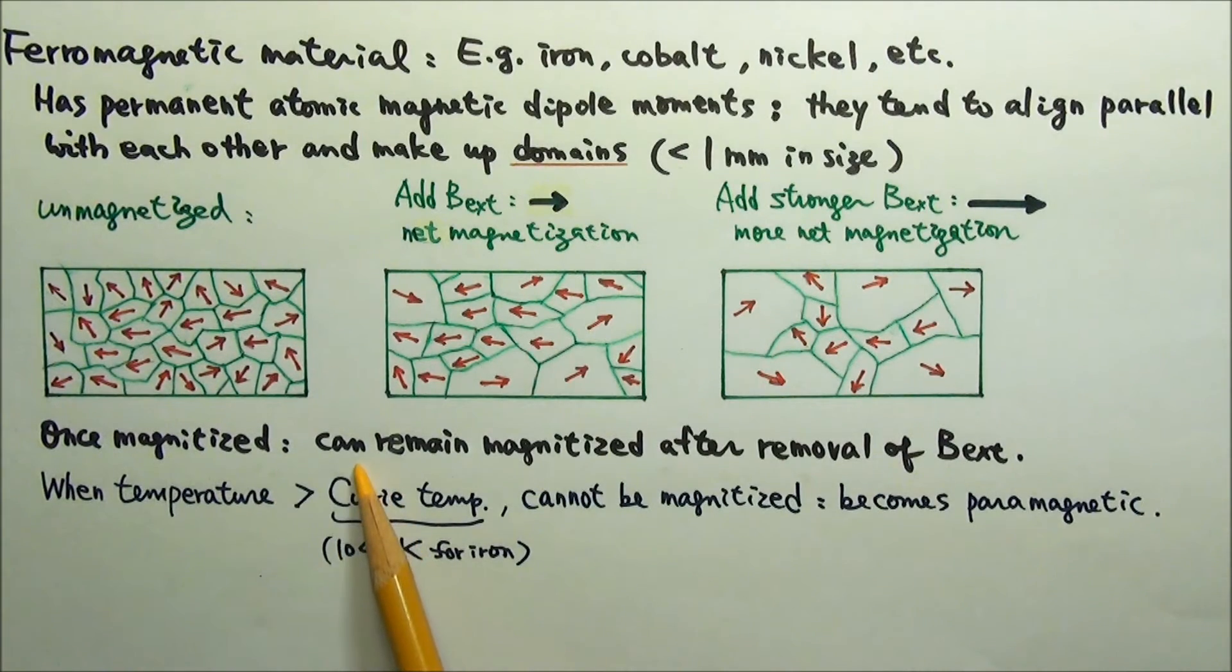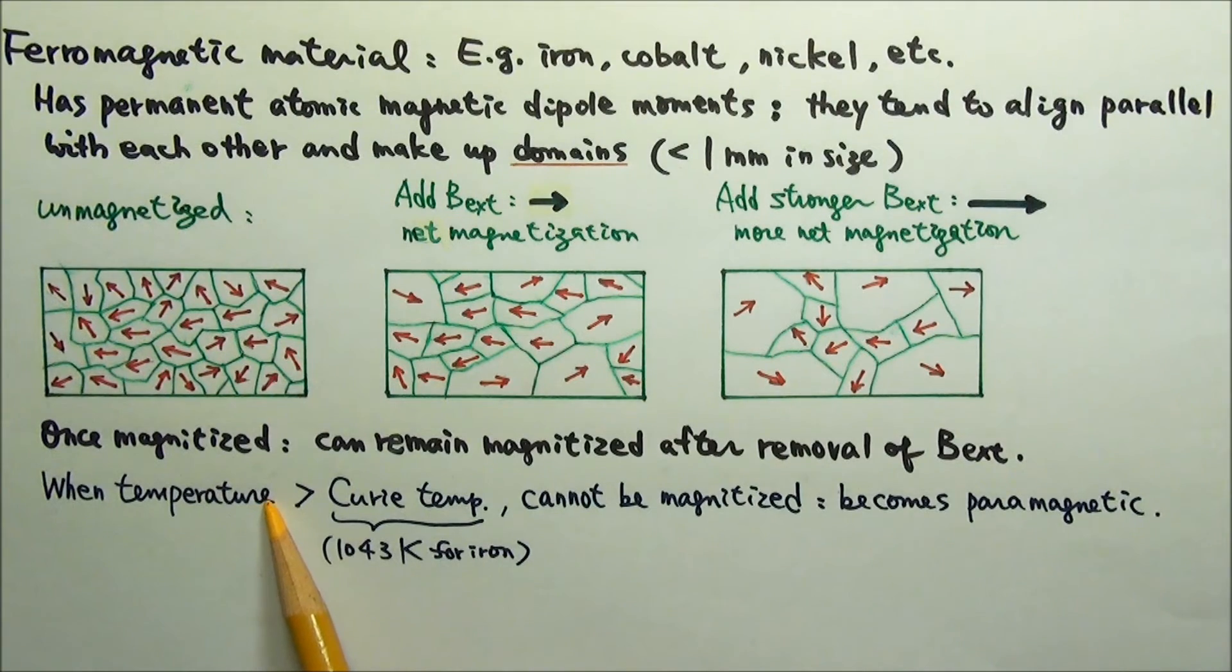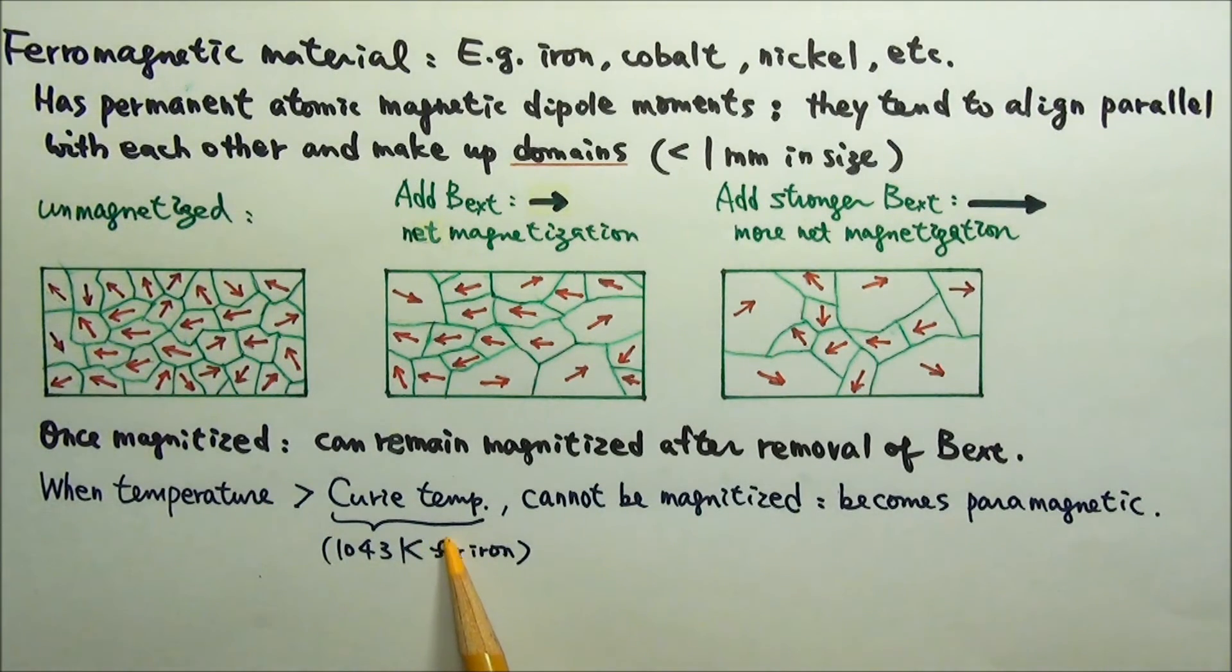Once magnetized, a ferromagnetic material can remain magnetized after the external magnetic field is removed. When the temperature of a ferromagnetic material exceeds a critical temperature called Curie temperature, it loses its ability to be permanently magnetized.